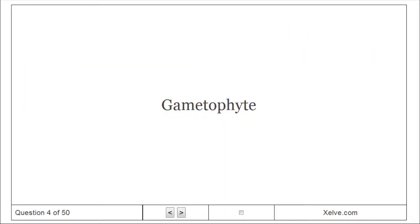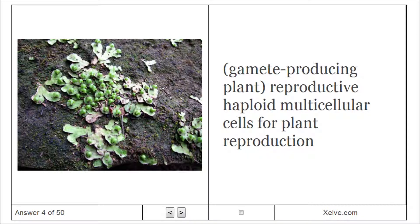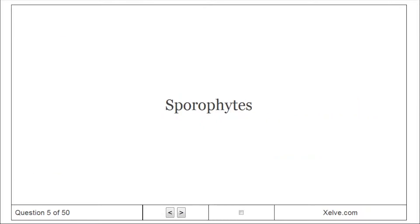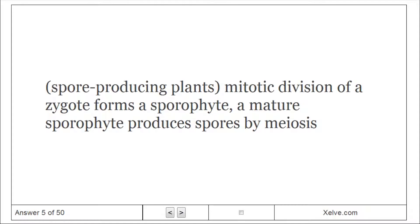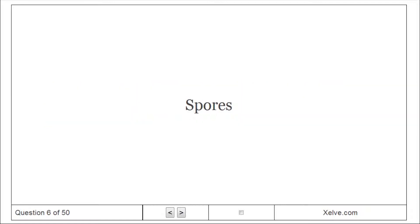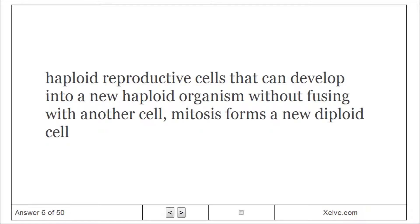Gametophyte: Reproductive haploid multicellular cells for plant reproduction. Sporophytes: Spore-producing plants. Meiotic division of a zygote forms a sporophyte. Produces spores by meiosis. Haploid reproductive cells that can develop into a new haploid organism without fusing with another cell. Meiosis forms a new diploid cell.